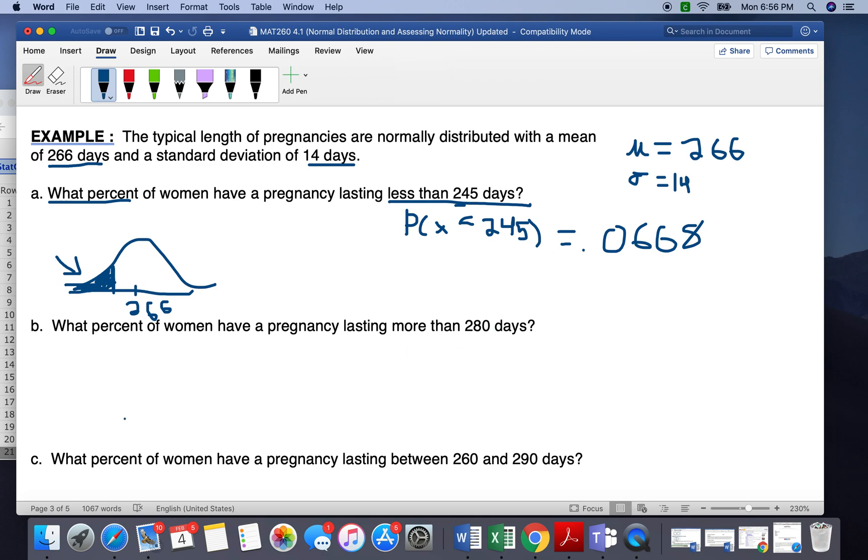So the next thing we want to do is greater than 280. So again, we're going to draw out our curve, put our 266, and we're going to mark the 280, which would be up here somewhere. And because it's greater than, lasting more, we want to shade in to the right. So we want more than the 280.